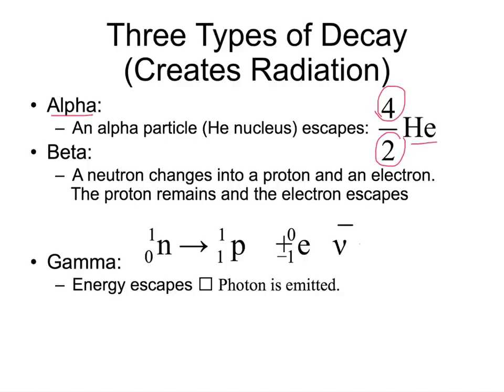Sometimes we will see that it is marked with the symbol He. Other times we will see it written as 4, 2, with an alpha particle like that.